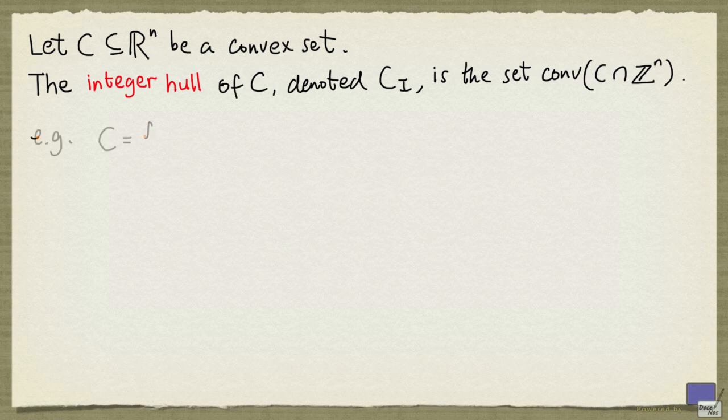Let's look at an example. Suppose that C is the set of x1, x2 satisfying the following inequality. If we sketch C, we'll get the unit disk.